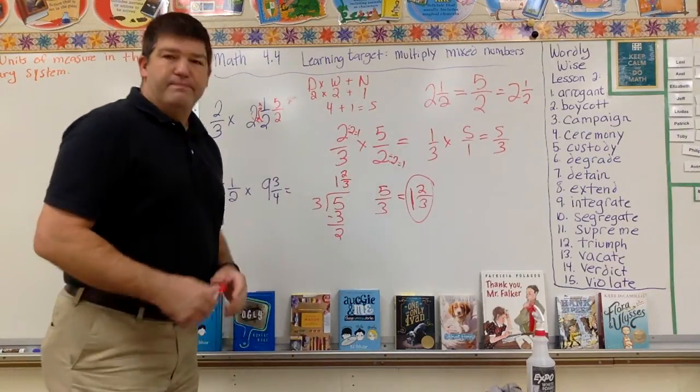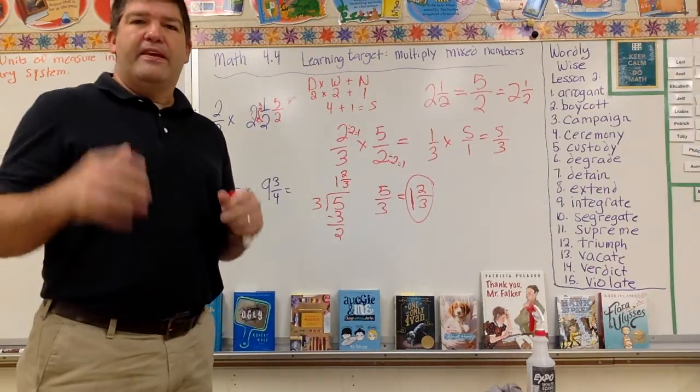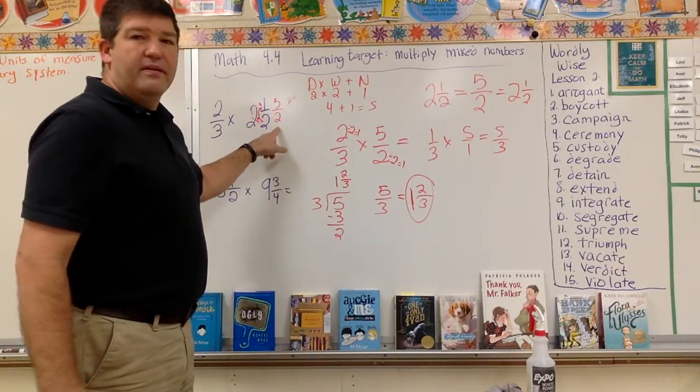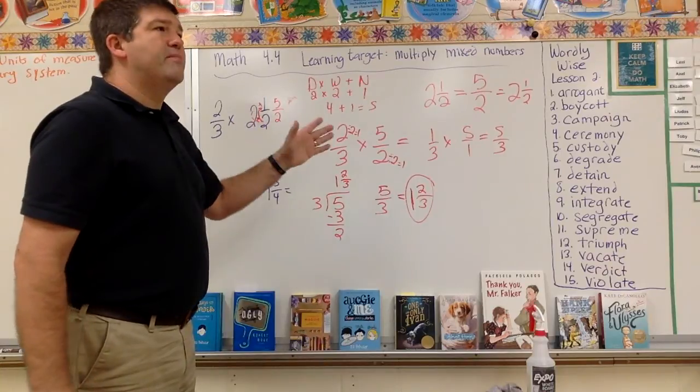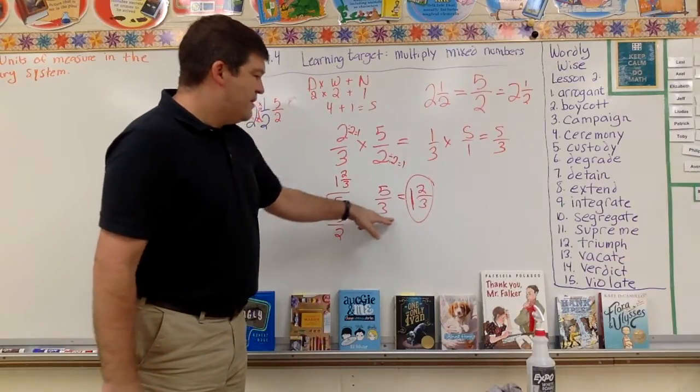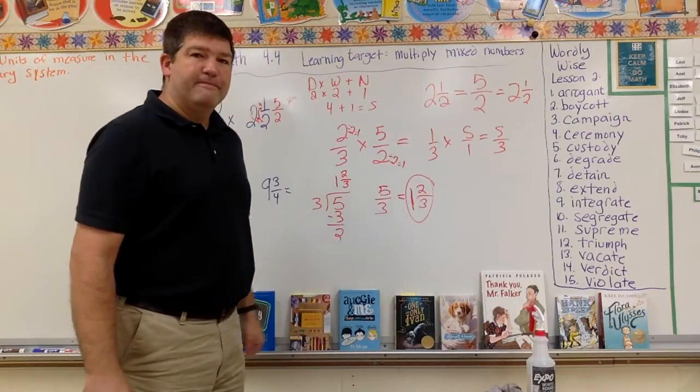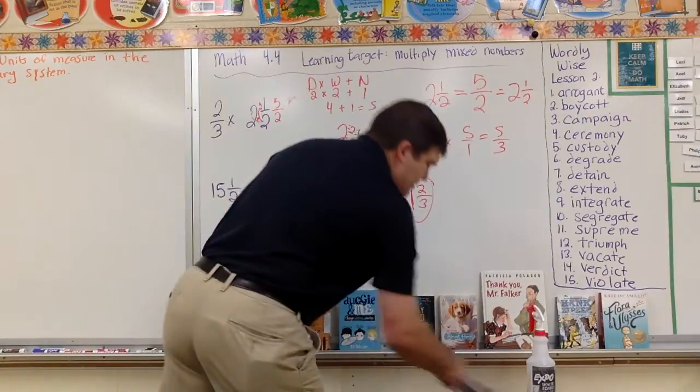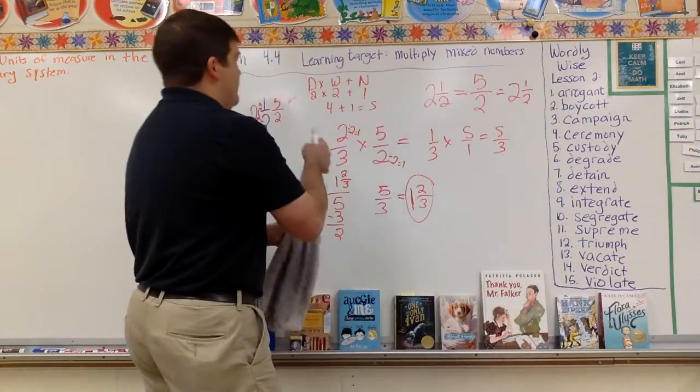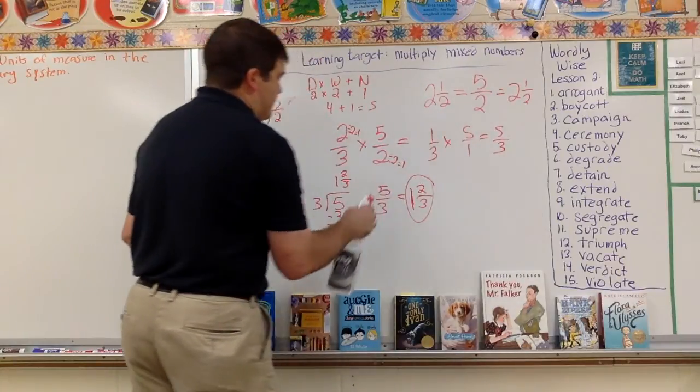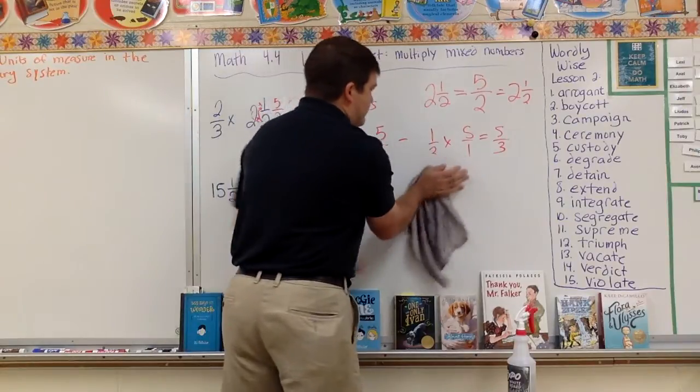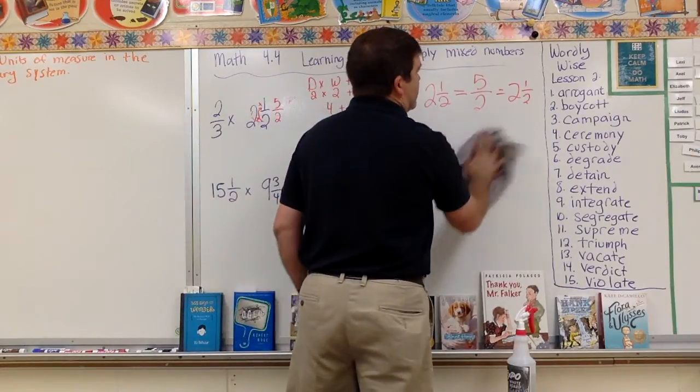That's a lot of mess on the board. The key is to take it from a mixed to an improper. Once you get it to an improper, simplify it, multiply across. And then if you need to, take it back into a mixed. Not too bad, I hope. And the key is knowing your multiplication facts. And if you don't know those, you need to work on those.